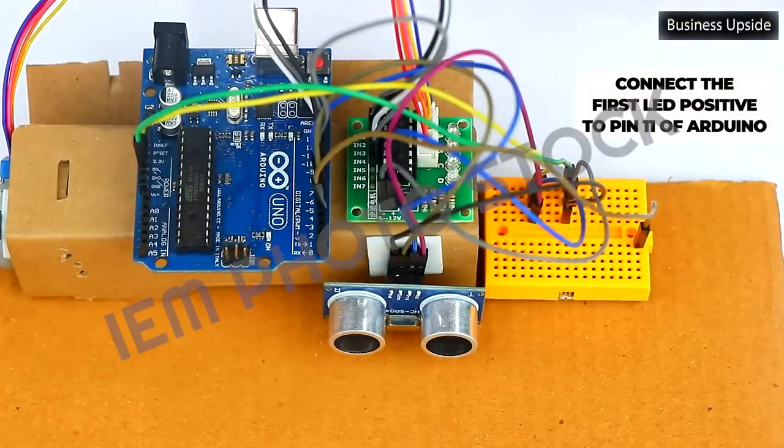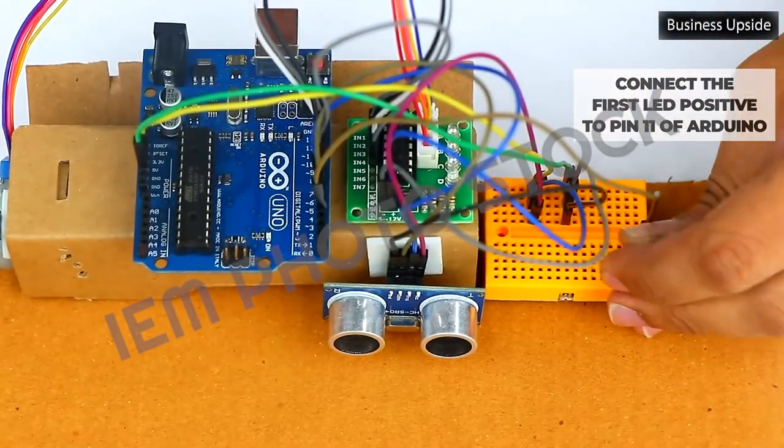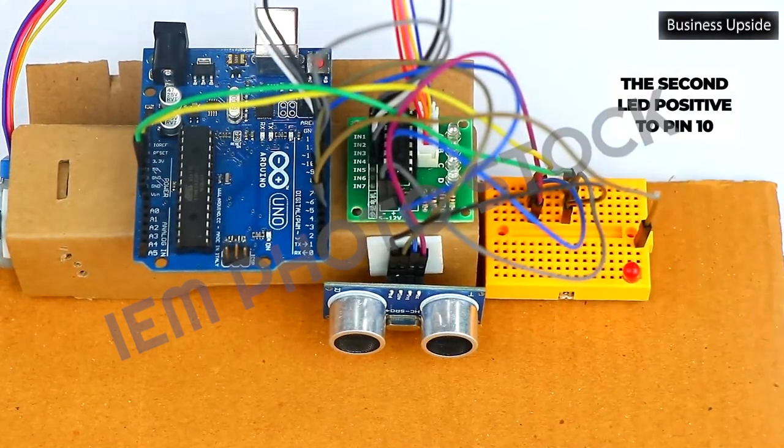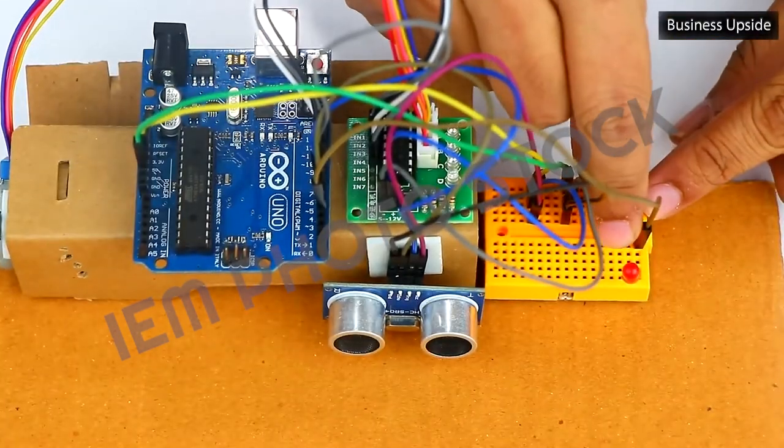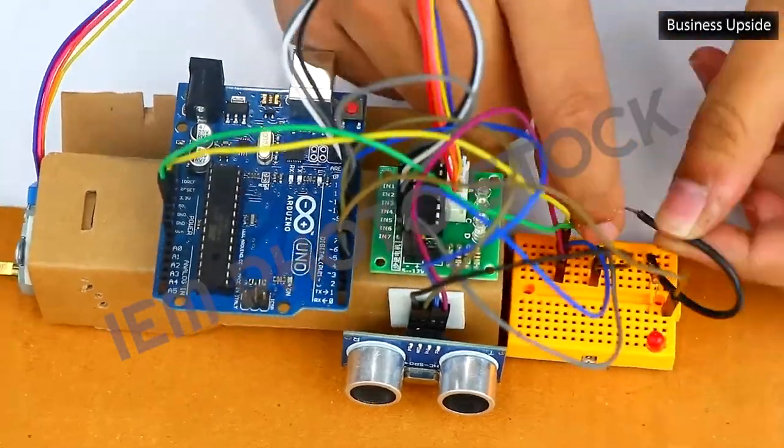Connect the first LED positive to pin 11 of Arduino and the second LED positive to pin 10. With a 1K resistor in between, connect the negatives of both the LEDs to the ground.